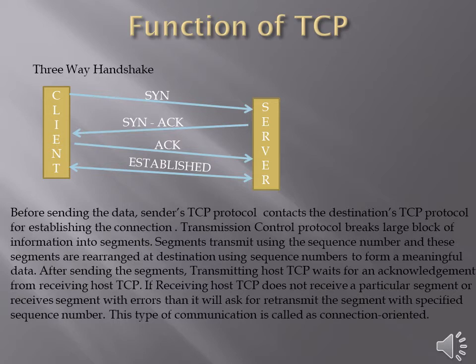After sending the segments, the transmitting host's TCP waits for an acknowledgement from the receiving host's TCP. If the receiving host does not receive a particular segment, or receives a segment with errors, it will ask for retransmission of the segment with the specified sequence number. This type of communication is called connection-oriented.